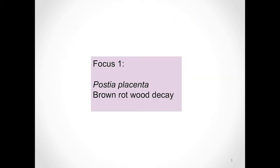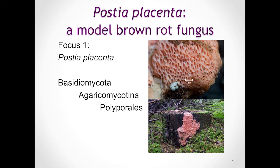So let's get started with the first topic: Postia placenta and brown rot wood decay. Postia placenta is a model brown rot fungus. It's a basidiomycete polypore that in the wild you can often see decaying logs and stumps. It has a resupinate growth form and almost looks like a crust, as you can see in these pictures here.